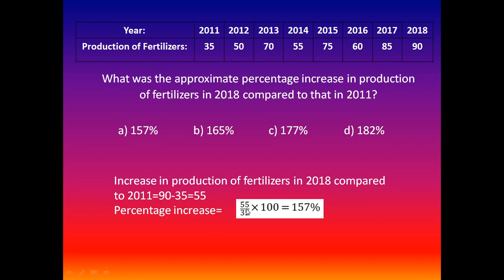The percentage increase is 55 divided by 35, multiplied by 100, comparing 2011 to 2018. Calculating this value gives 157%. So option A is correct: 157%.